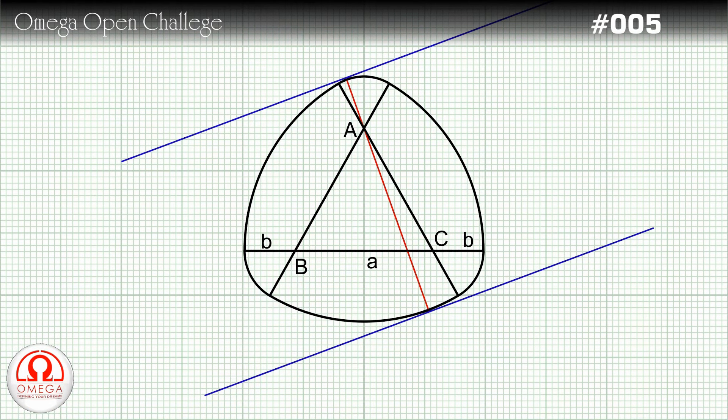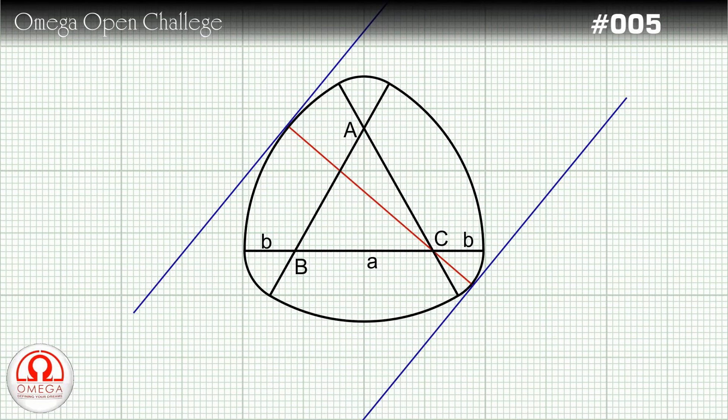If you rotate the tangents further, they leave the arc with center A and touch the arcs with center C. But the radius of the arcs are same, so the distances do not change.